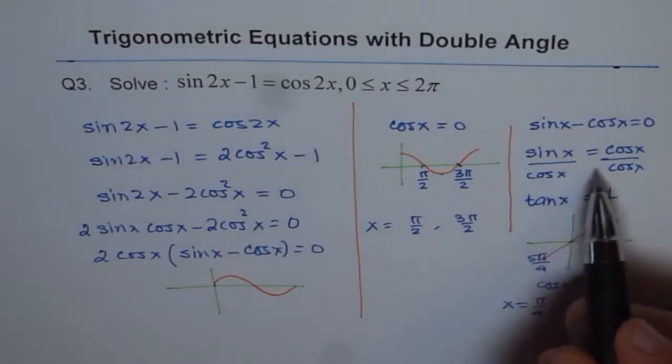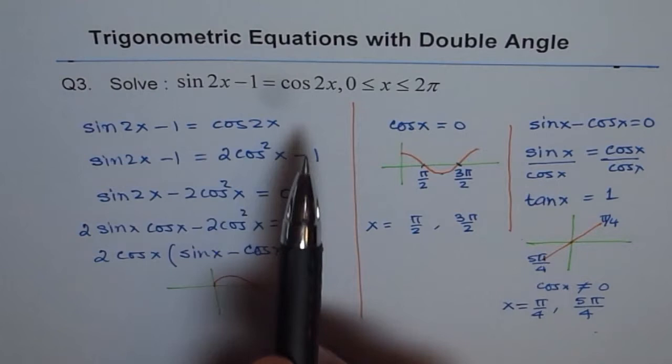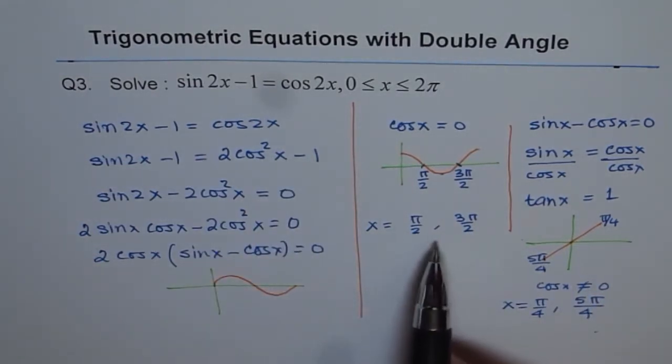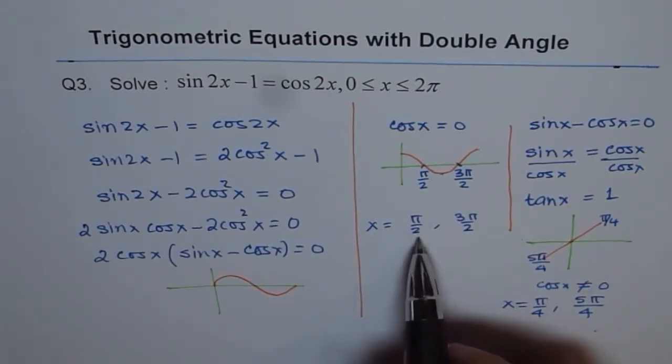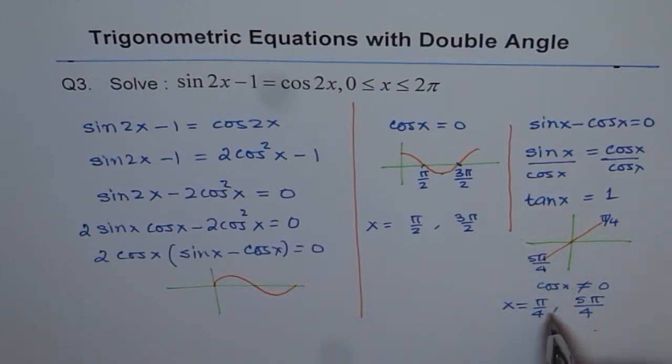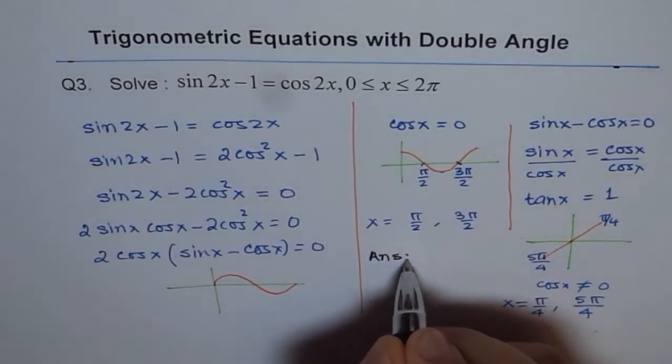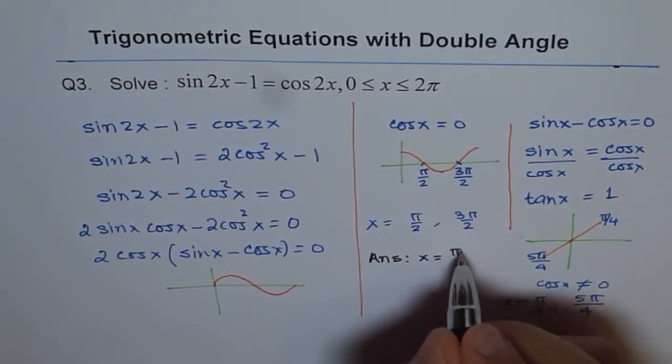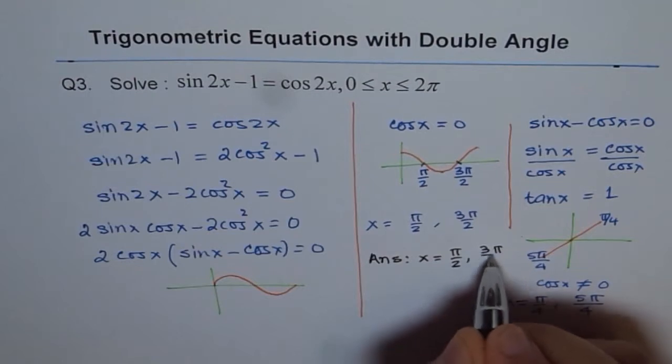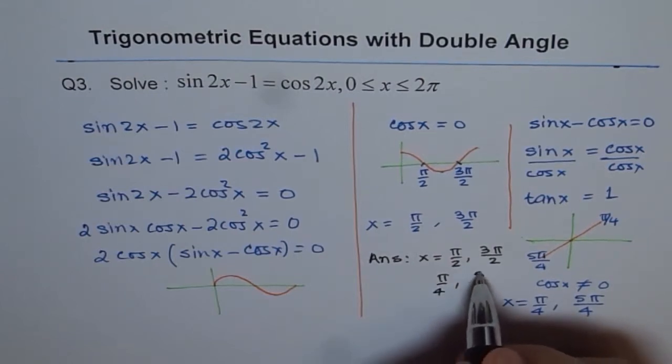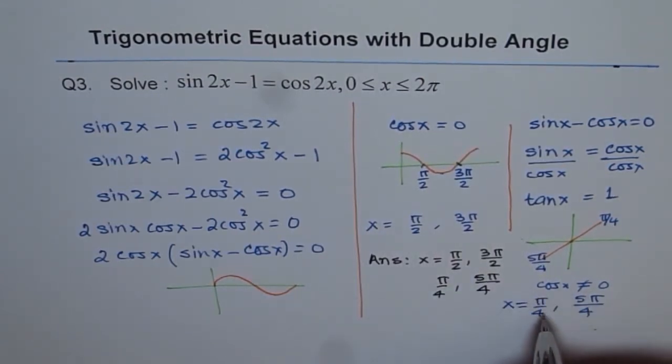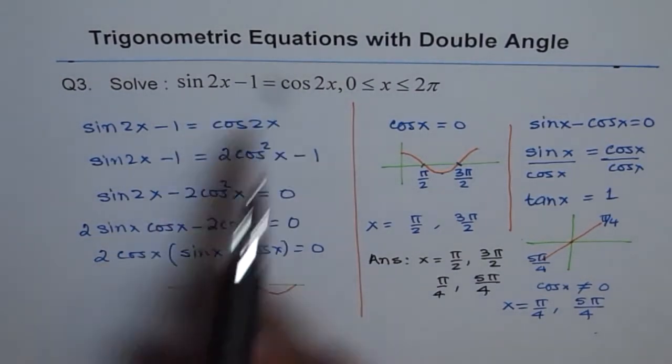Since this is part of our derivation and not really part of the equation given, we should include those answers in our set. We have four answers: x equals π/2, x equals 3π/2, x equals π/4, and 5π/4. The answers for x are π/2, 3π/2, π/4, and 5π/4, because these answers don't contradict our equation.